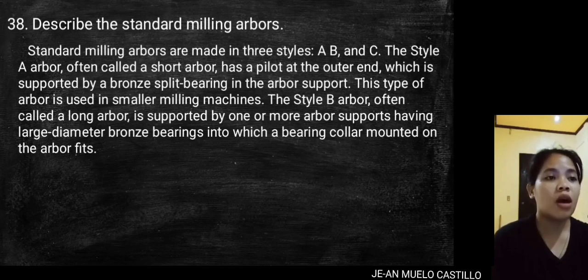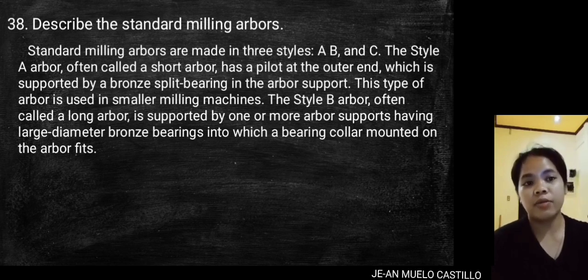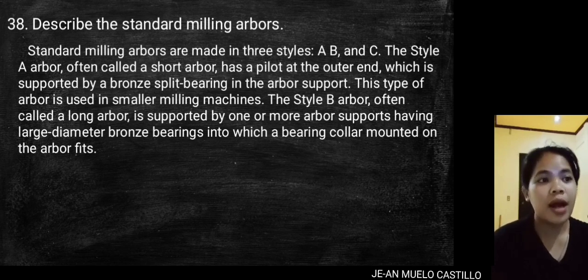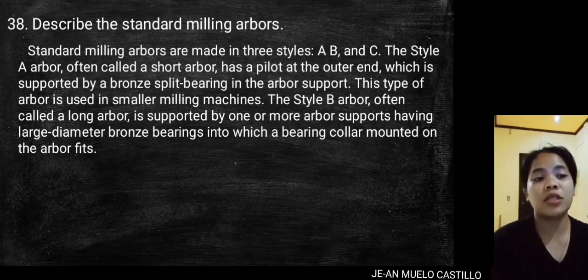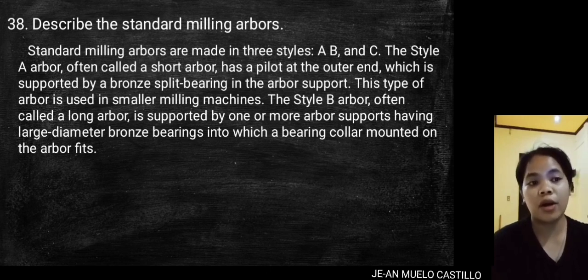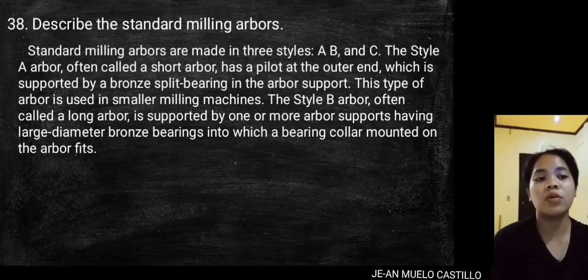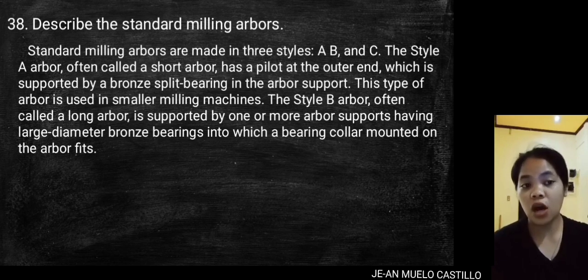Standard milling arbors are made in three styles: A, B, and C. The style A arbor, often called a short arbor, has a pilot at the outer end supported by a bronze split bearing and arbor support — used in smaller milling machines. The style B arbor, often called a long arbor, is supported by one or more arbor supports having large diameter bronze bearings into which a bearing collar mounted on the arbor fits.